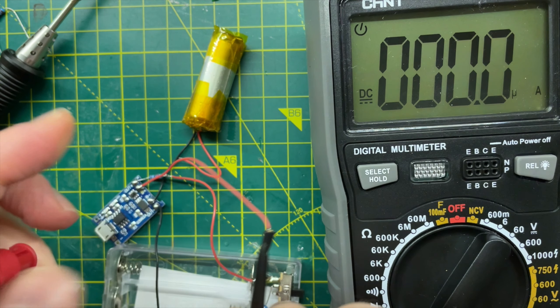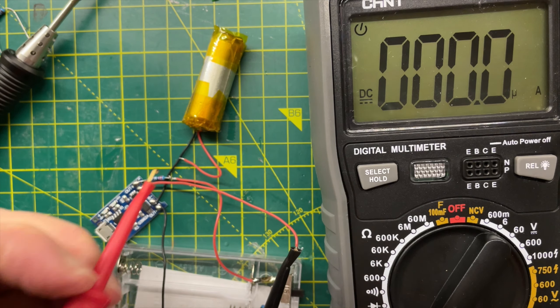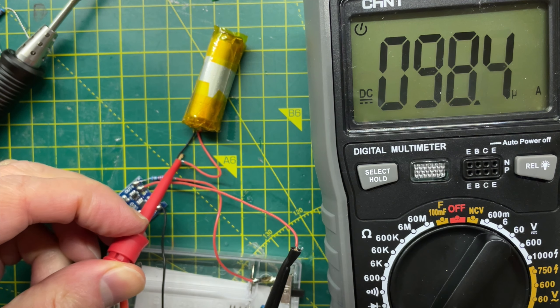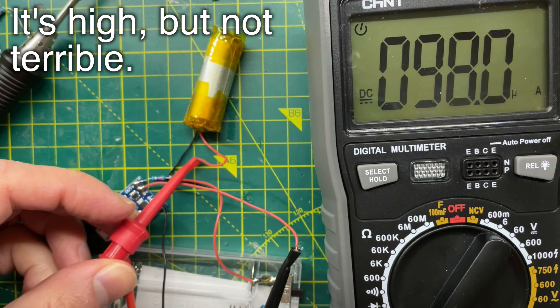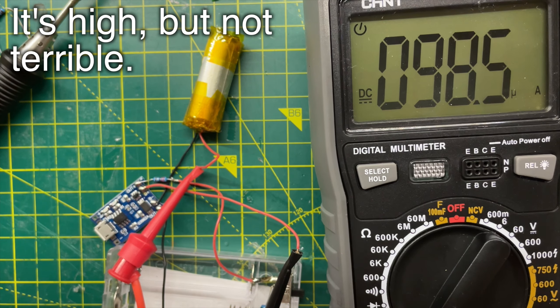Next I thought maybe the PCB is faulty and it's draining the battery. But when I measured the current flowing from the battery, it was only 98 microamps. Nowhere near enough to drain the battery.